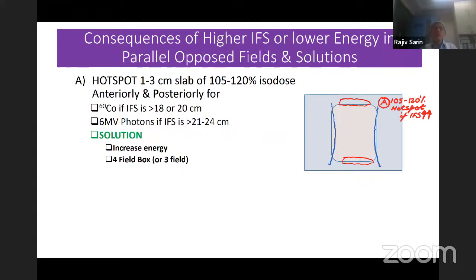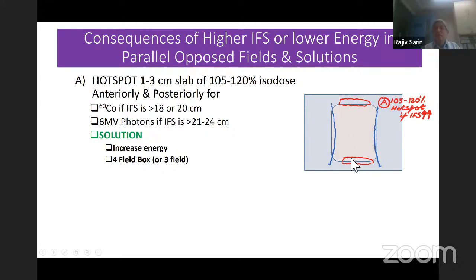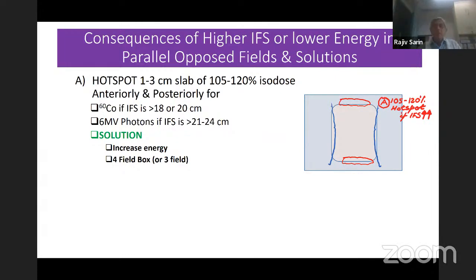In the old days when we used only cobalt or 6 MV photons with large separation and no high energy available, you would see anterior woody fibrosis and sometimes posterior fibrosis in the pelvis. Solutions: increase the energy, or use a four-field or three-field box.